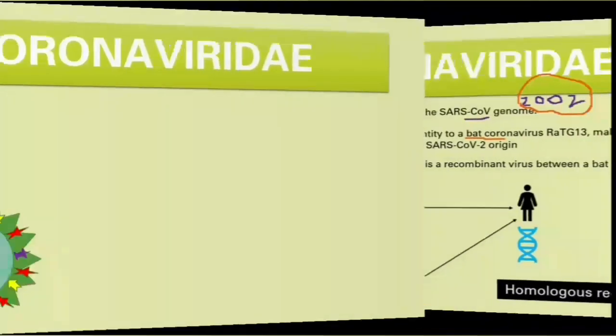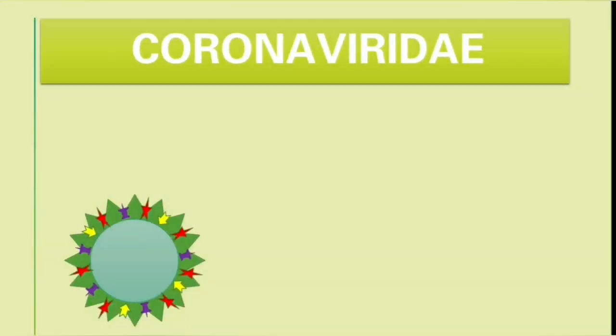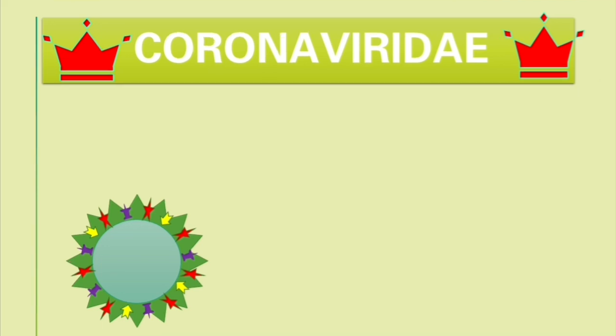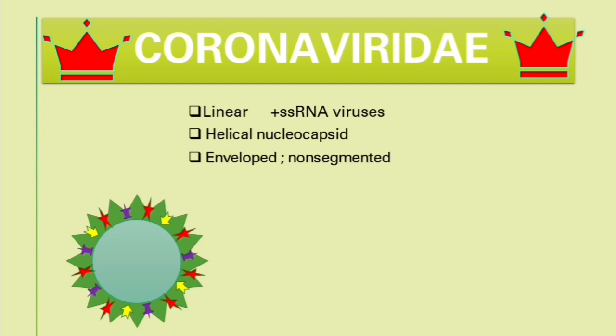On the electron microscope, coronaviruses appear like crowns — that's why they are called corona. These viruses are linear positive-sense single-stranded RNA viruses. They have a helical nucleocapsid, an envelope, and they are non-segmented.